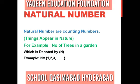We will start from natural numbers. Natural numbers are counting numbers like 1, 2, 3, 4, 5 and so on.